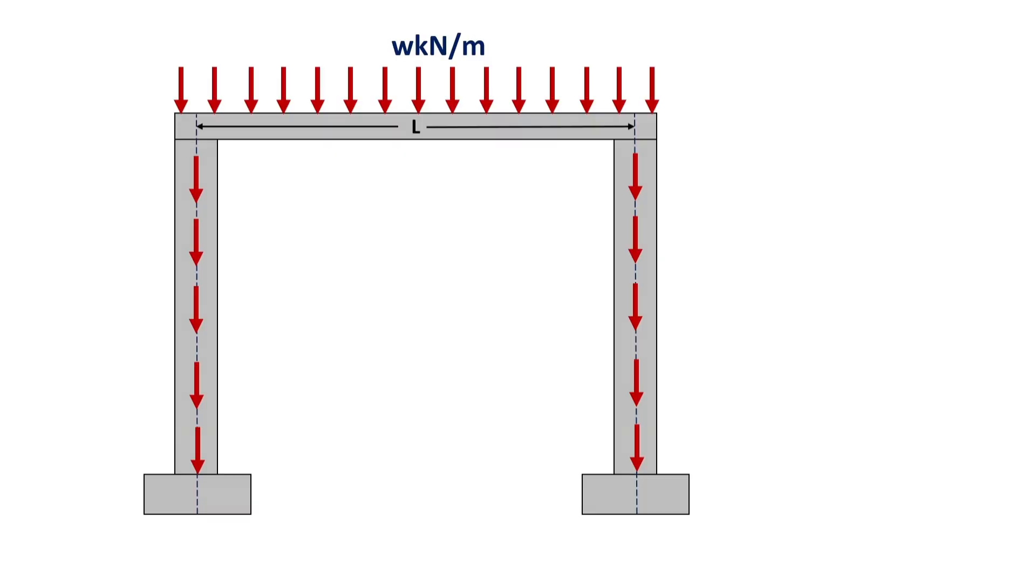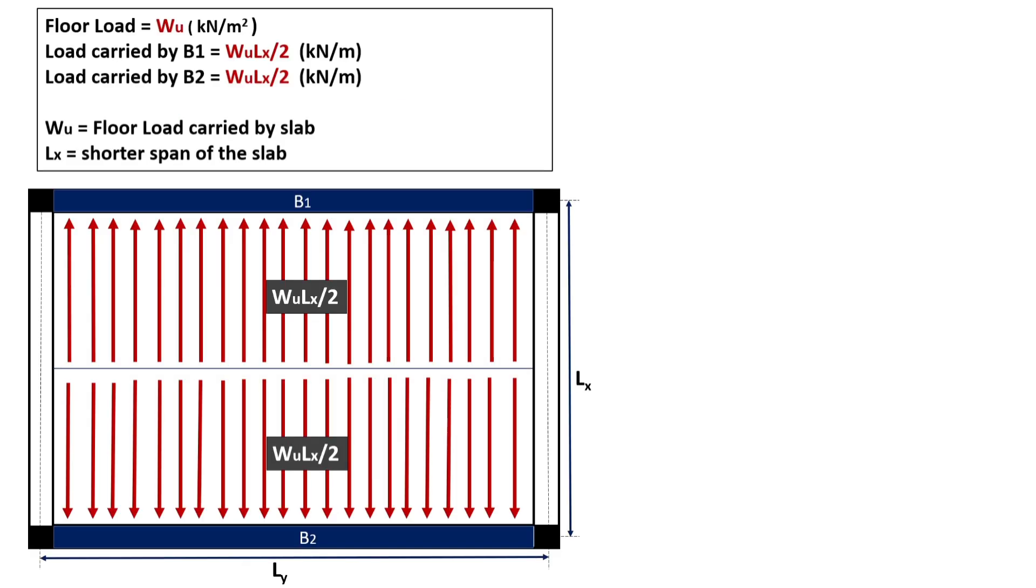Suppose W is the floor load carried by the slab in terms of kN per meter square. The load carried by the beams B1 and B2 in terms of kN per meter will be W Lx upon 2 where W is the floor load carried by the slab and Lx is the shorter span of the one way slab.